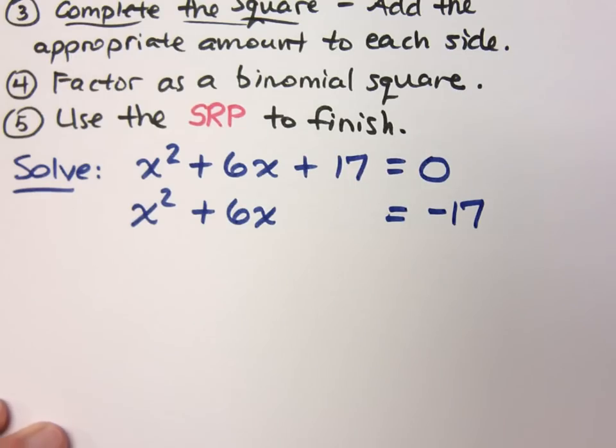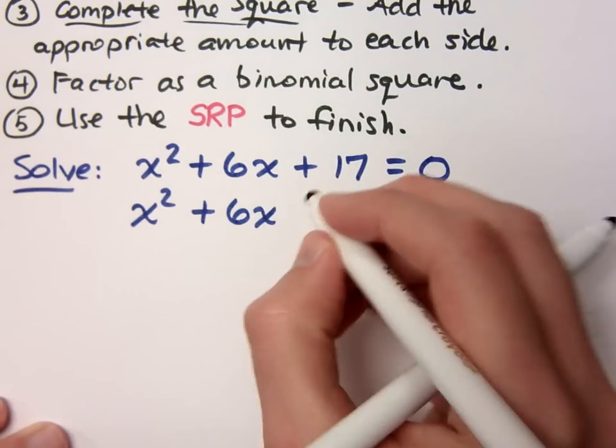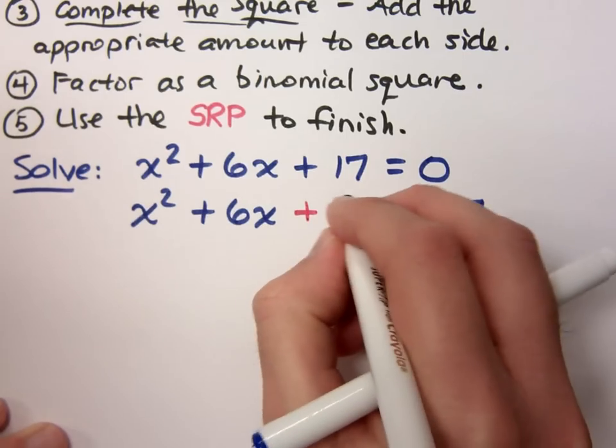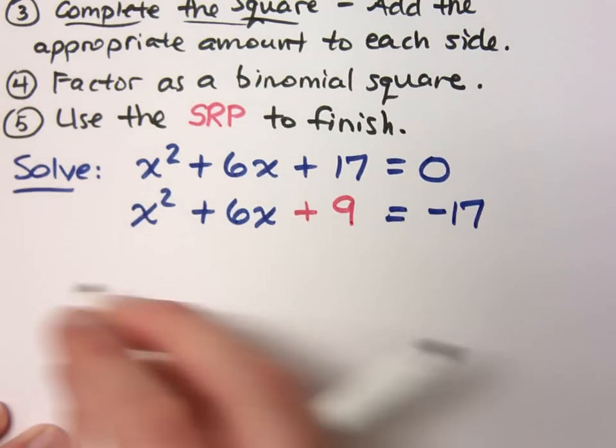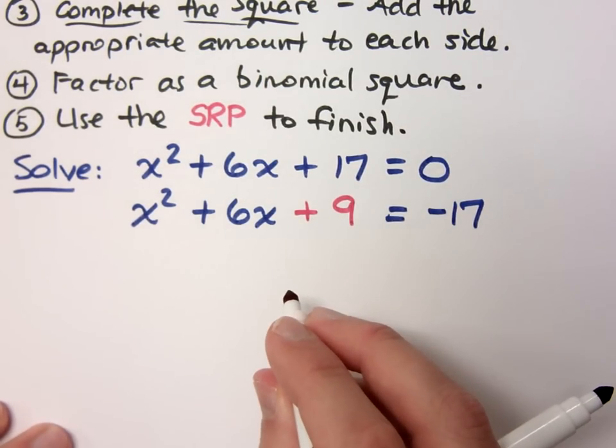How'd you get plus nine, Kelly? By dividing by two and squaring it. Divide by two and square it. Right? So I'm just going to put plus nine, right? So this guy's perfect. He's going to be a square when I factor him, right? But if I stop right here, I'm in trouble. Does anybody know why?